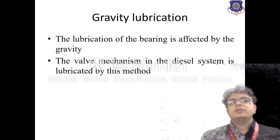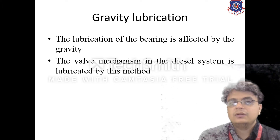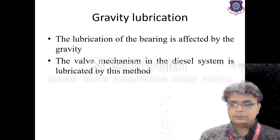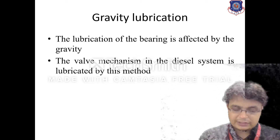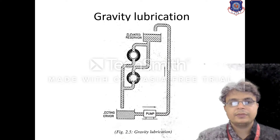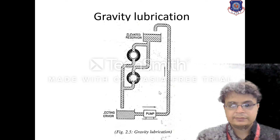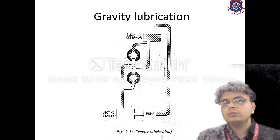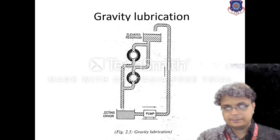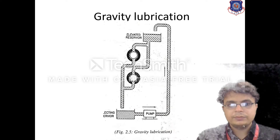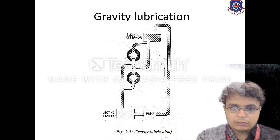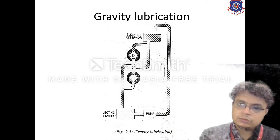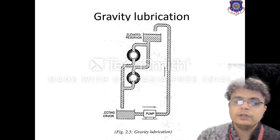Let's start with gravity lubrication. The name itself says that when the motion or movement of oil is because of gravity, such a method is termed as gravity lubrication. In this system, the oil is allowed to move under its own gravity. It moves toward a valve, and the valve controls the flow — when off, flow is stopped; when open, oil moves under gravity.